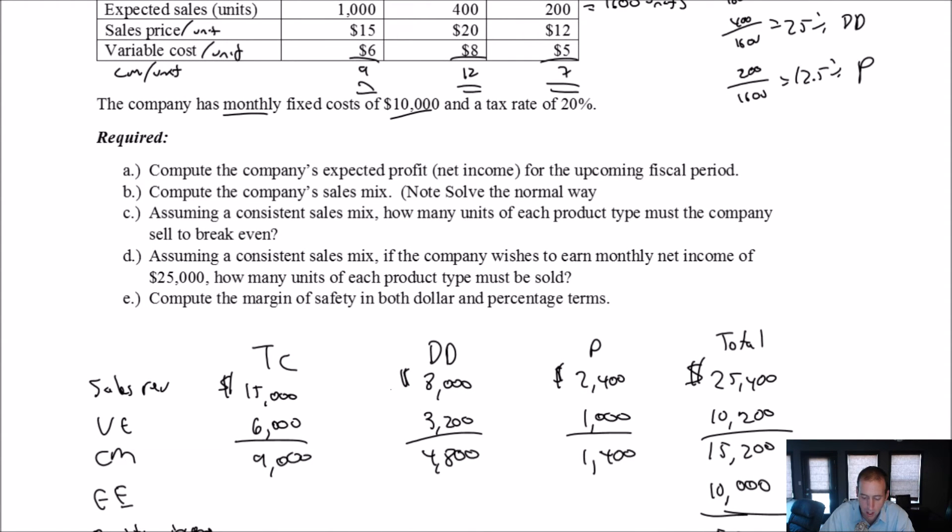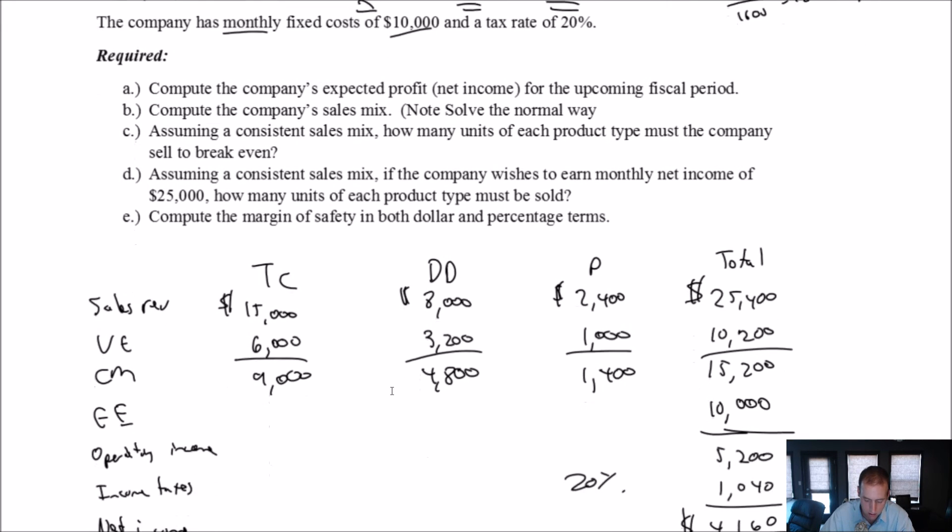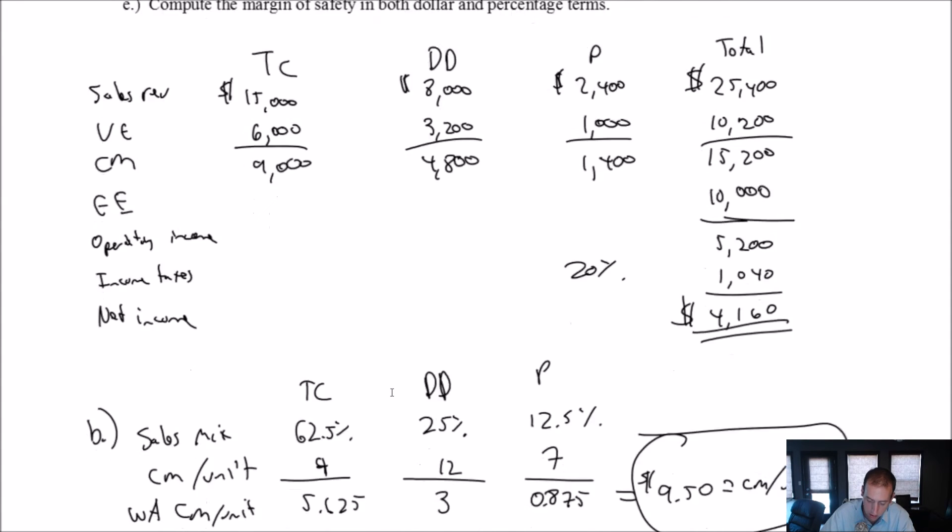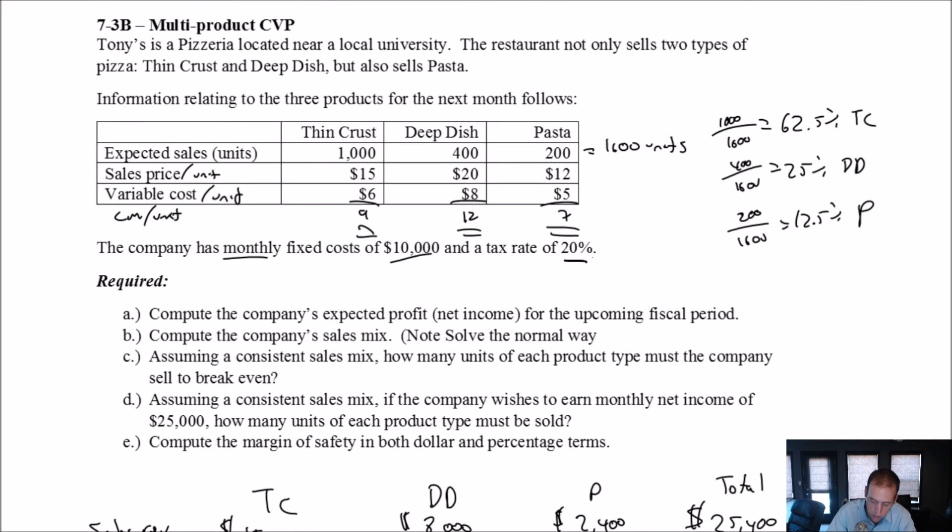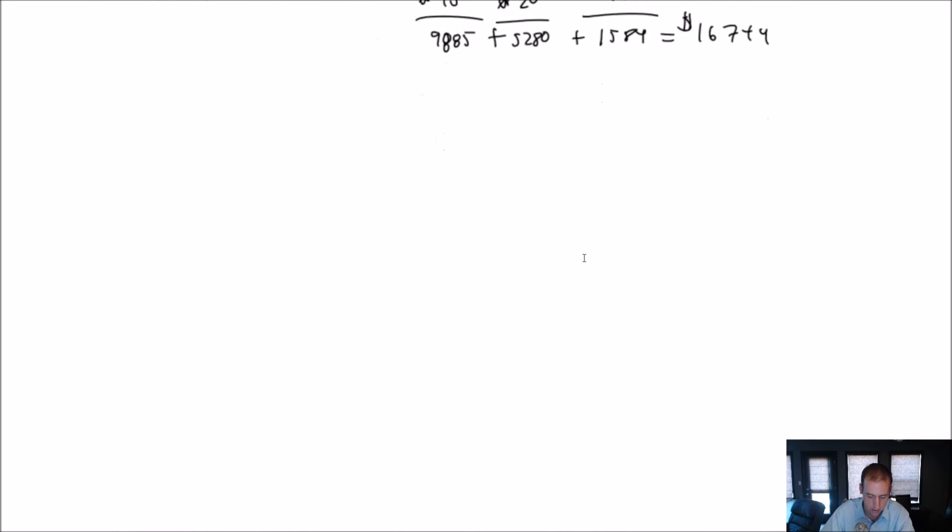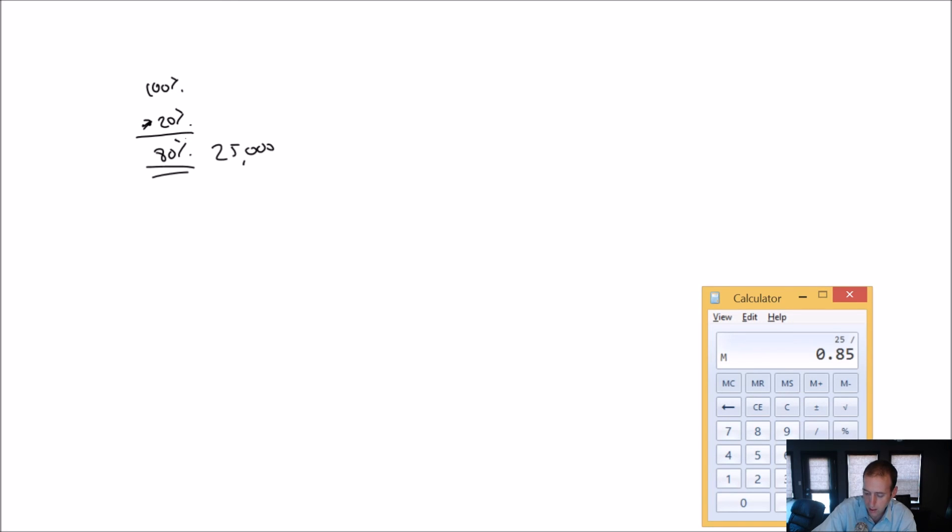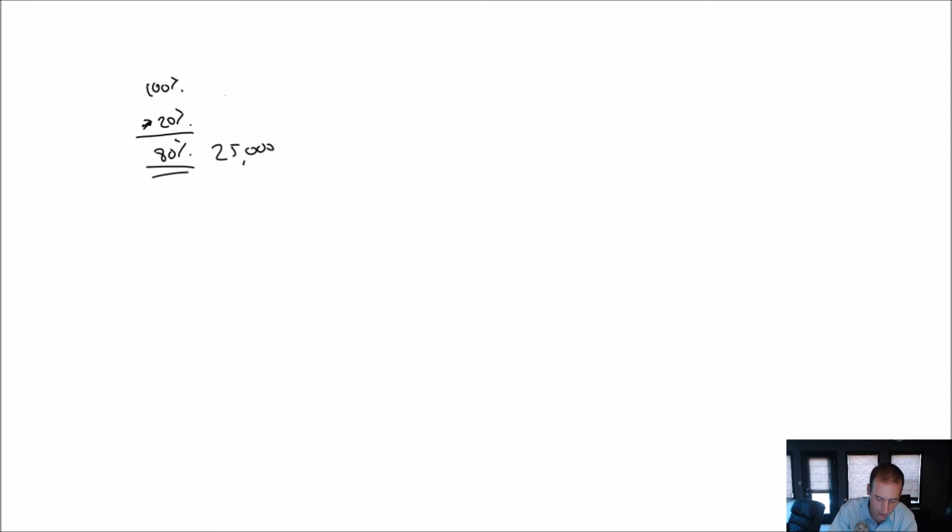Moving on to D. Assuming a consistent sales mix. If the company wishes to earn monthly net income of $25,000, how many units must they sell? Well, obviously, more than what they're selling currently. A lot more because they're only making $4,160. So, if they want to make $25,000 and taxes are 20%, how much do they want to make before tax? If net income is going to be $25,000, we know taxes are going to be 20% of pre-tax net income. So, if pre-tax net income is 100%, taxes are going to be 20% of that, and net income is going to be 80%. We just divide net income by 80% to figure out what our pre-tax net income would be. 25 divided by 0.8, and you're going to find that it's 31.25.